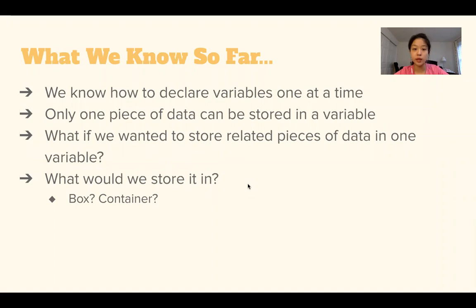So what do we know so far? We know how to declare variables one at a time, and we know that only one piece of data can be stored in that variable. However, what if we wanted to store related pieces of data into one variable? What would it be stored in — a box or a container?